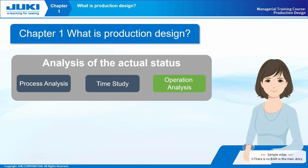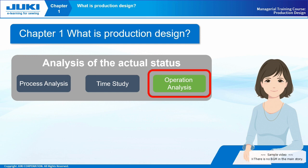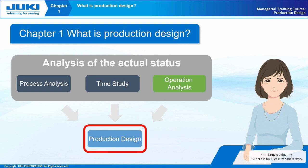Chapter 1: What is Production Design? The first thing a line manager needs to do is to understand the current situation in the factory. The analysis of the actual status, such as process analysis, time study, and operation analysis, can be used to understand the current production capacity of the production line. Production Design is a method of constructing optimal production lines and layouts by compiling the data obtained through the analyses and considering the process distribution by operators and the equipment location in the factory for the production items.